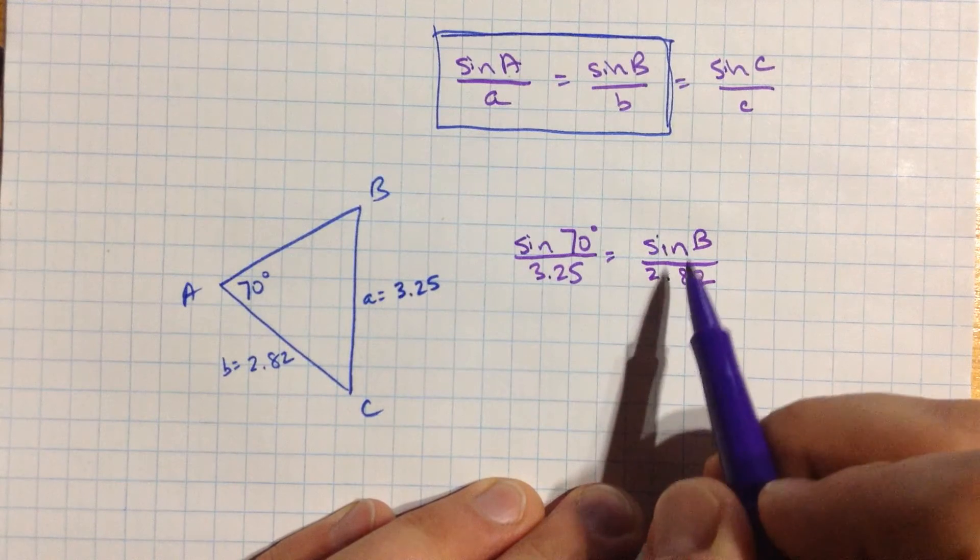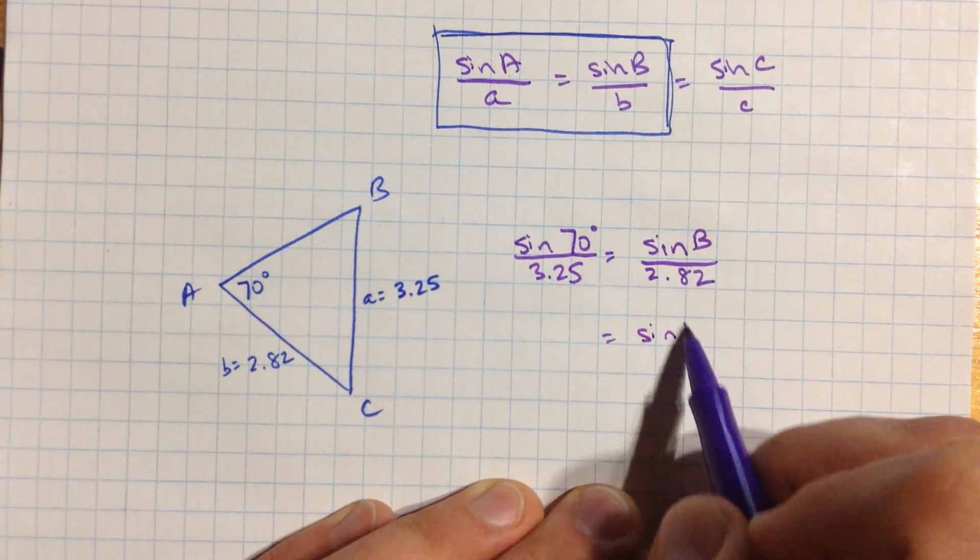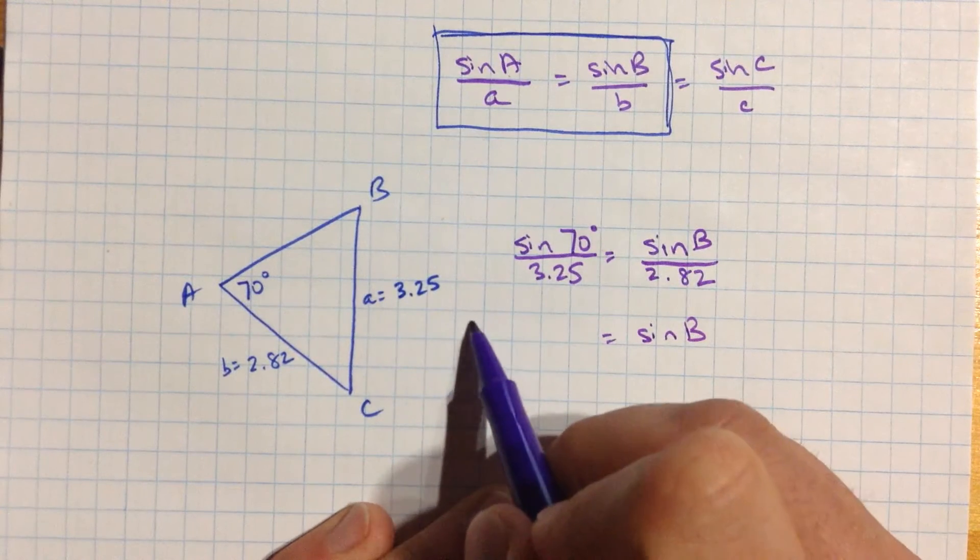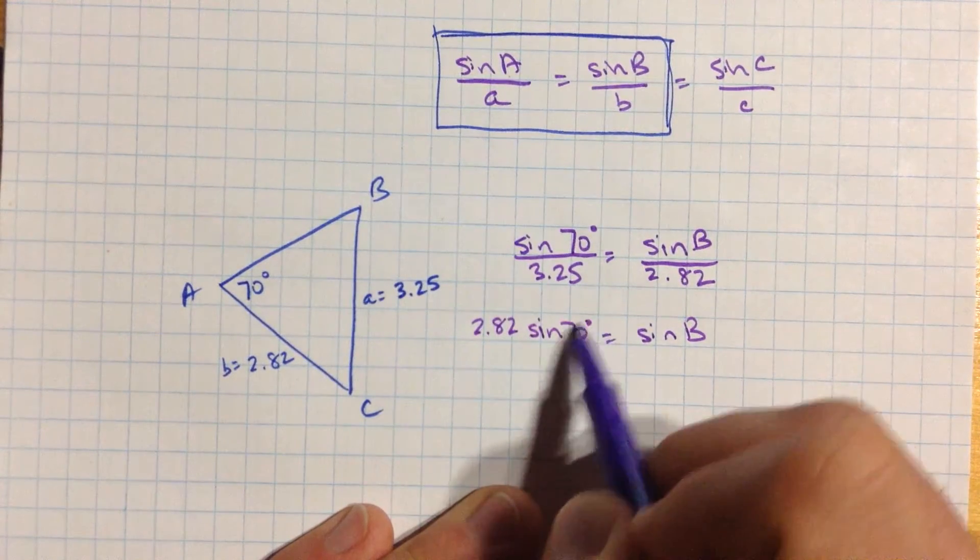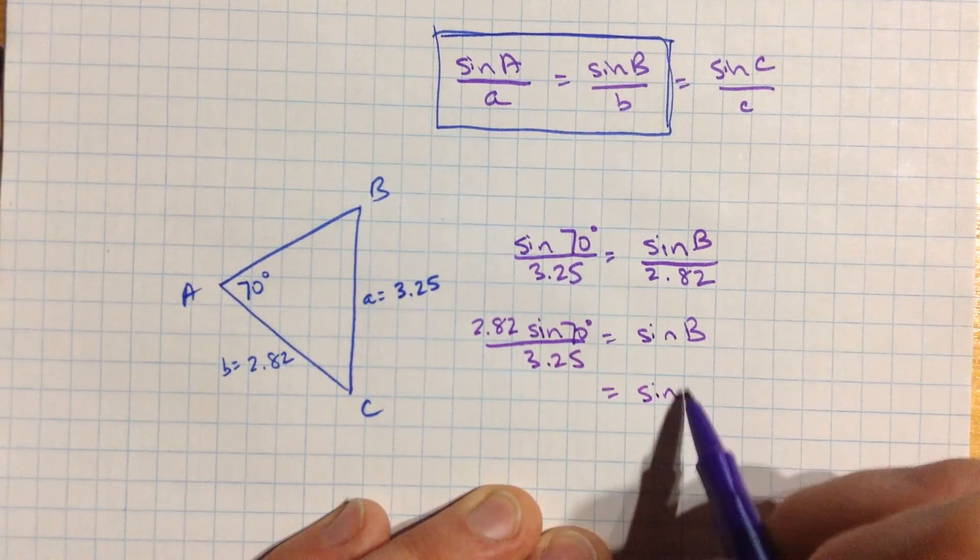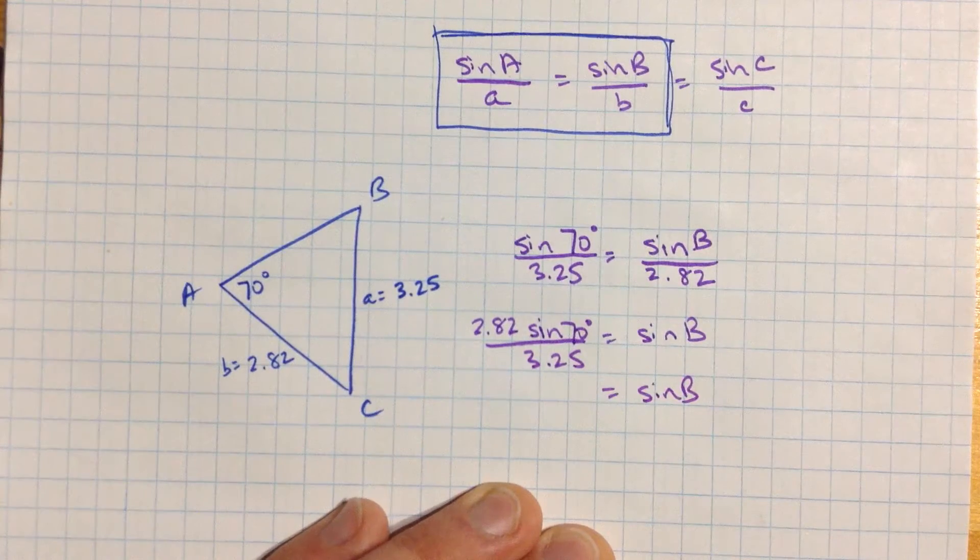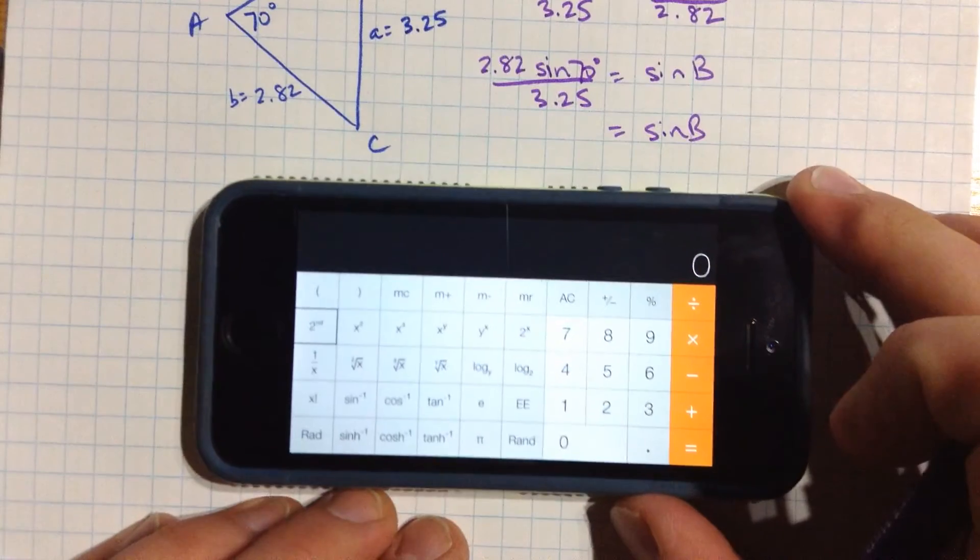So I can rearrange this, multiply both sides by 2.82. On this side I have sine b, over here I have 2.82 times the sine of 70, and that's divided by 3.25. I'll just grab my calculator, and I'll show you this on an iPhone.